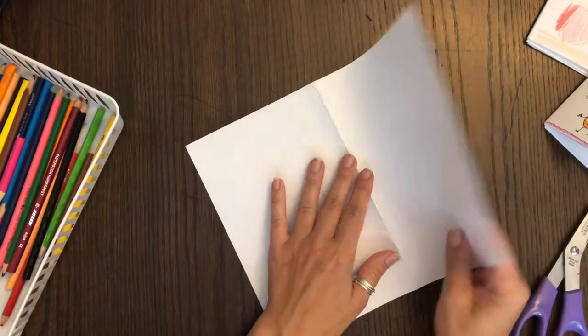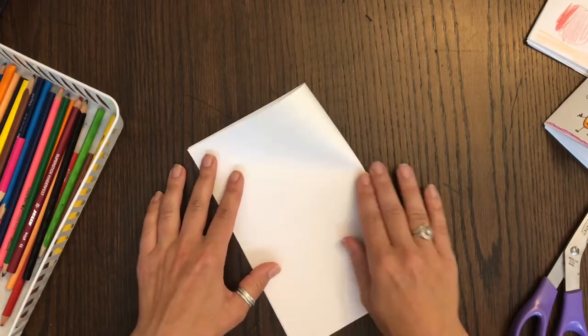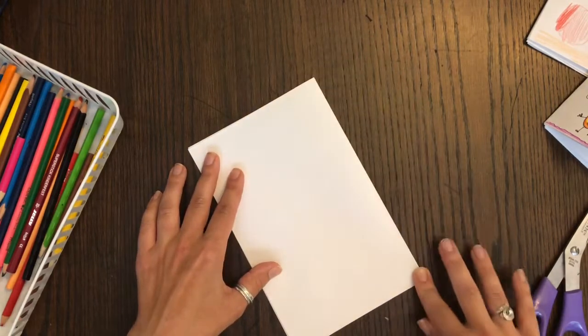Then I'm going to turn the paper over to the other side and refold it the opposite direction. Again, I'm going to run my finger along the fold to make sure I have a nice sharp crease.